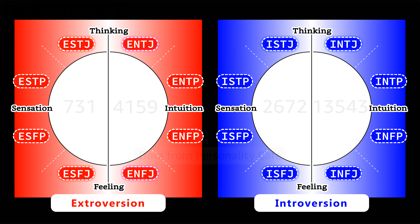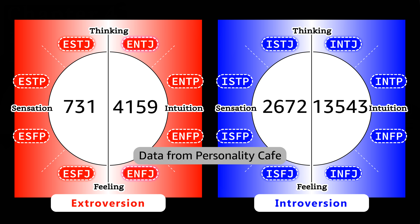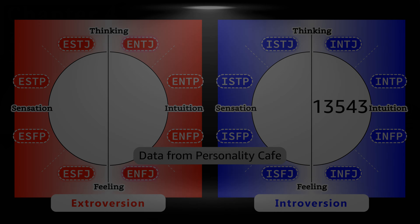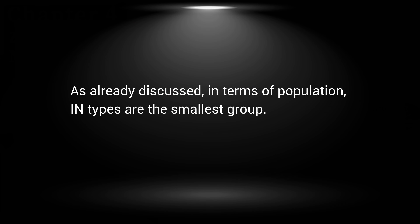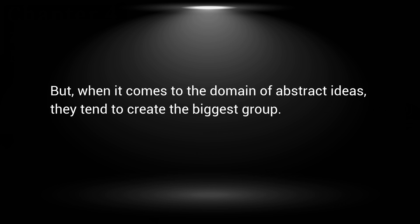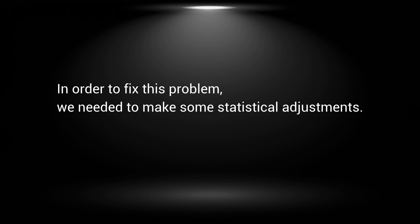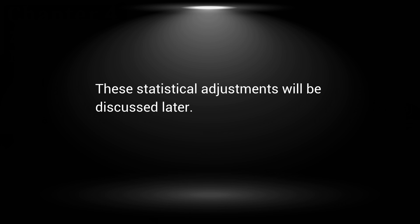Here is another survey about the same topic. The sample size of ES types is the smallest, which is 731. On the other hand, the sample size of IN types is the biggest, which is 13,543. As already discussed, in terms of population, IN types are the smallest group. But when it comes to the domain of abstract ideas, they tend to create the biggest group. In other words, online tests about the correlation between MBTI types and eniotypes tend to create sample selection bias. In order to fix this problem, we needed to make some statistical adjustments, which will be discussed later.